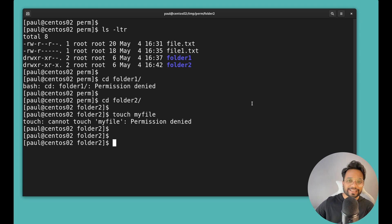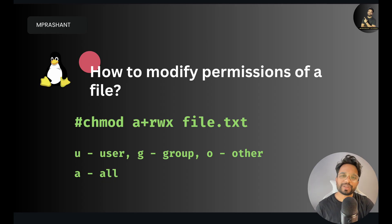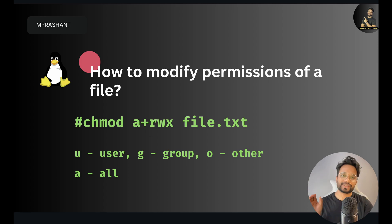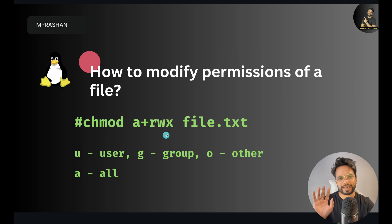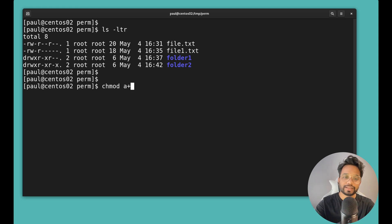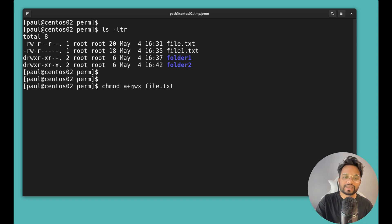Let's now understand how we can change and modify permissions. To change permissions we use the 'chmod' or change mode command. The syntax is: 'chmod a+rwx filename'. The 'a' means all (user, group, and others). The '+' means we are adding permissions; if you want to remove permissions, use '-'. Instead of 'a' you can use 'u' for user, 'g' for group, or 'o' for other.